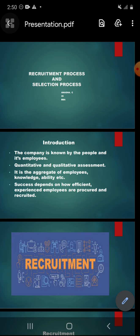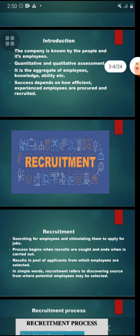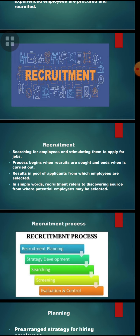So, what is recruitment? Recruitment is about searching for employees and stimulating them to apply for jobs. The process begins when recruits are sought and ends when applications are carried out. It results in a pool of applicants from which employees are selected. In simple words, recruitment refers to discovering the source from where potential employees may be selected. The main objective of the recruitment process is to create a pool of prospective job candidates.